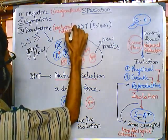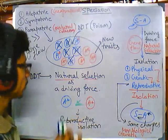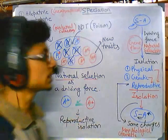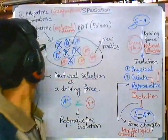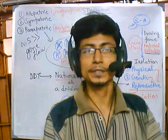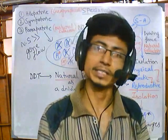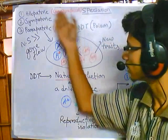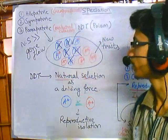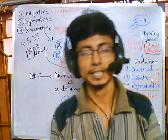So we have seen natural selection playing the major role in parapatric speciation. I hope this video helps you understand what parapatric speciation is. In the next video, we will be talking about sympatric speciation, which is completely different from both allopatric and parapatric types. Thank you.